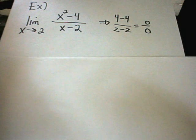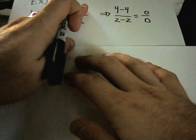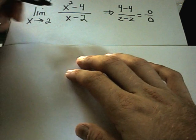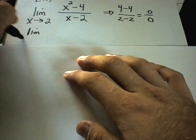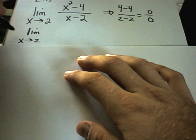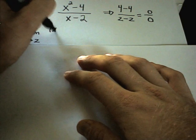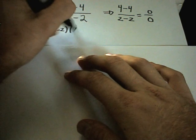Now, this is where your factoring skills kick in because notice that you can factor the numerator, the x squared minus 4, as x minus 2, x plus 2.